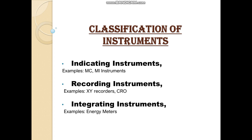Absolute instruments give the magnitude of the quantity. For example, a tangent galvanometer measures the magnitude of current. For secondary instruments, the quantity being measured can only be determined by observing the output indicated by the instrument. These instruments are calibrated by comparison with an absolute instrument or another secondary instrument. For example, a meter bridge or any Ohm's law application instruments can be considered as secondary instruments.